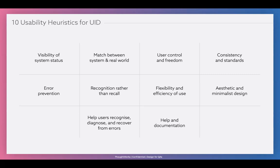Help users recognize, diagnose, and recover from errors. On iPhones, when something goes wrong, it gives you options — cancel, try something else, or go to settings and change something. It's not just saying 'there's an error, we can't move forward.' You can direct users saying: if you don't want this to happen, do this. Don't block them. Help and documentation: every website and service needs help and documentation. Always have a help section with documentation available so that if users cannot find something or don't know how to work with it, they can go read it.